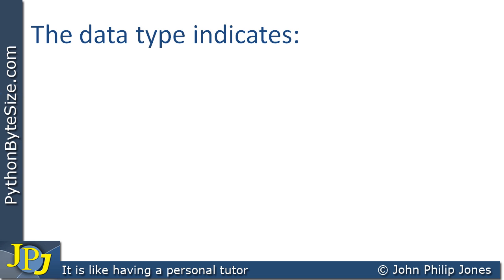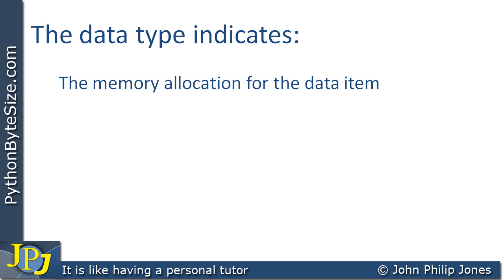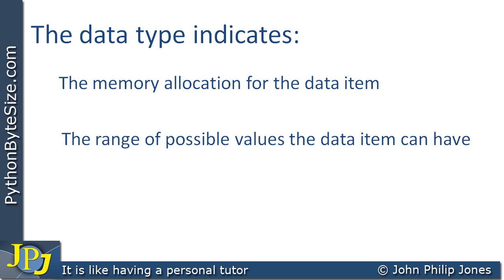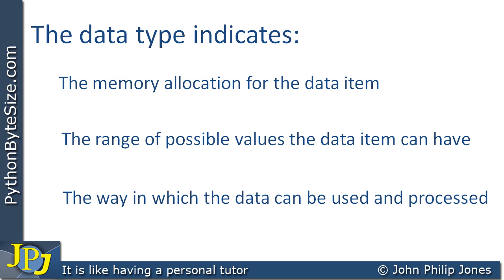To summarize, the data type indicates: the memory allocation for the data item — floats take up more space than integers; the range of possible values the data item can have — integer has a certain range, while long has a bigger range; and the way in which the data can be used and processed. We've seen that it is possible to multiply two variables of type integer together, but it is not possible to multiply two variables whose type is string.